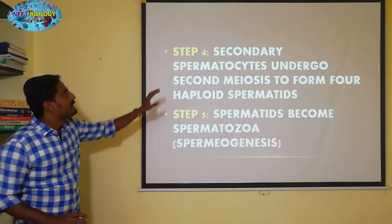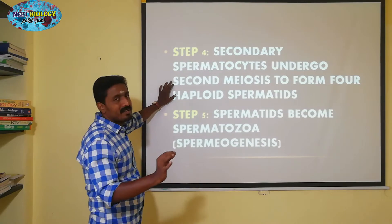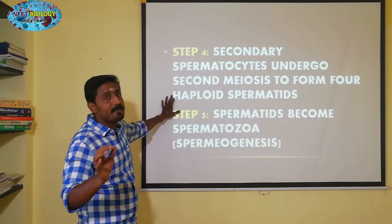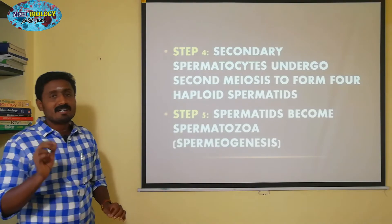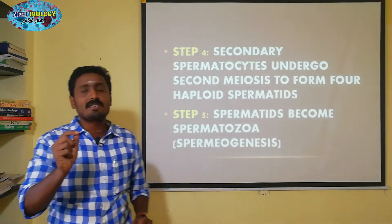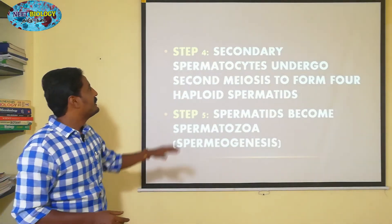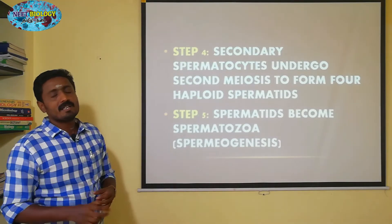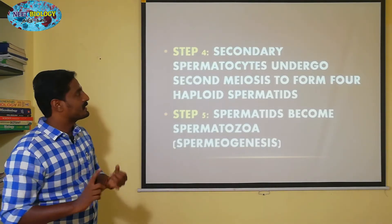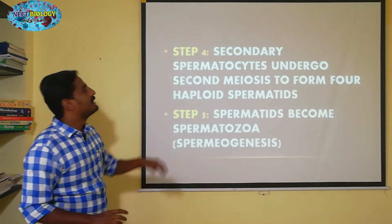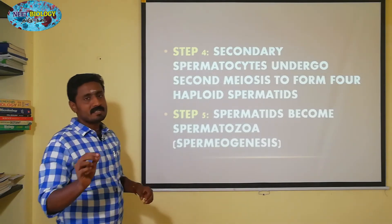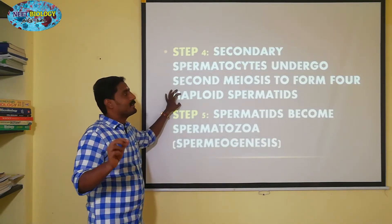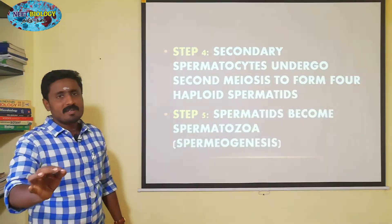Step 3, Step 4 — secondary spermatocytes undergo second meiosis to form four haploid spermatids. That is one step.